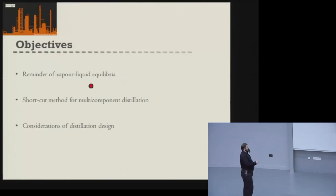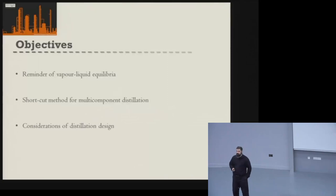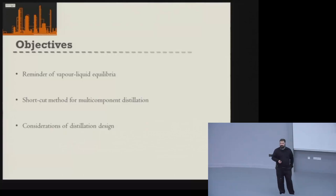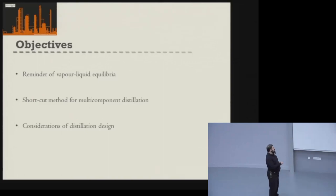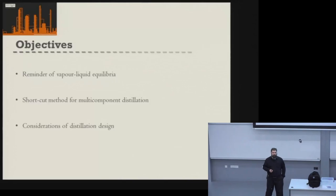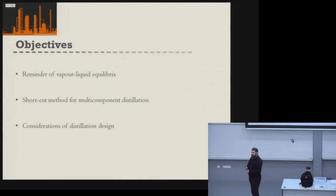I'll start off with a quick reminder of vapor-liquid equilibria, just so you remember what's important for this topic. Then we'll move on to thinking about multi-component distillation, and I'll introduce the shortcut design method. After that, we'll have some considerations about the important things we need to think about when actually designing distillation columns.